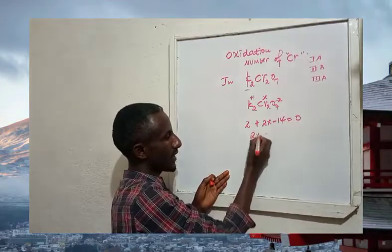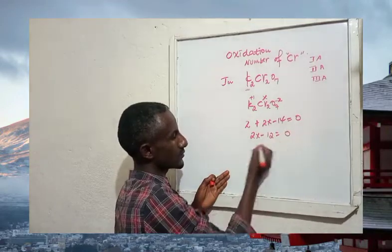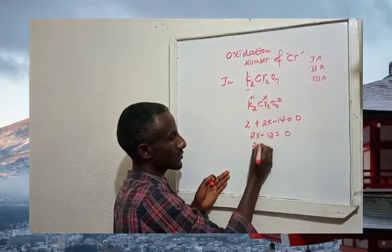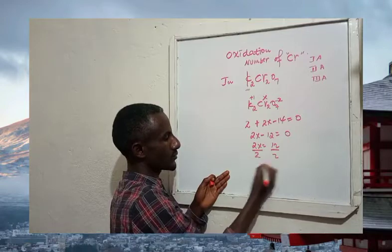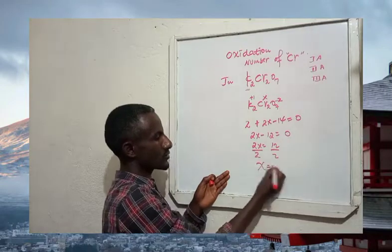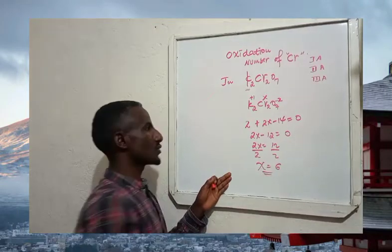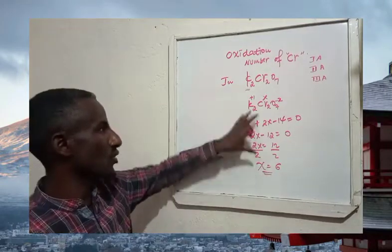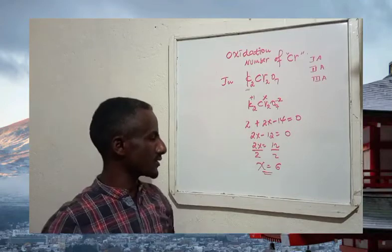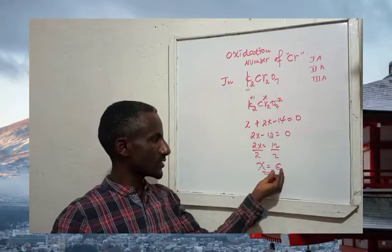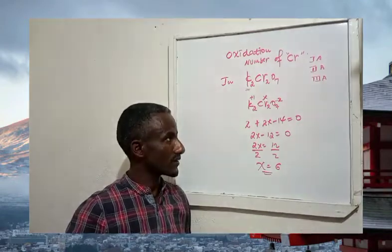Solving: 2x minus 12 equals 0, so 2x equals 12, giving x equals 6. Therefore, the oxidation number of chromium in potassium dichromate is positive 6.